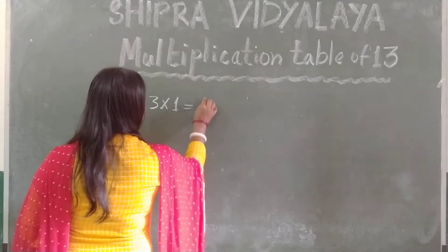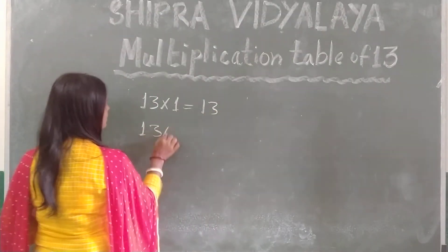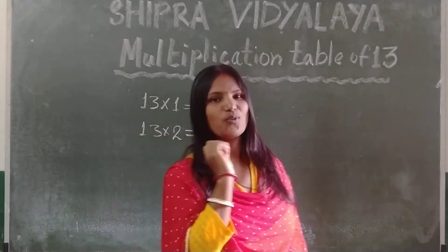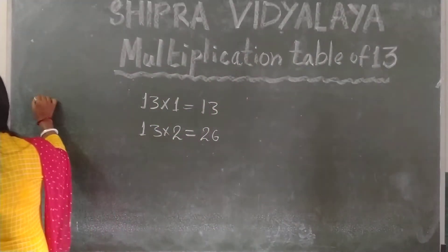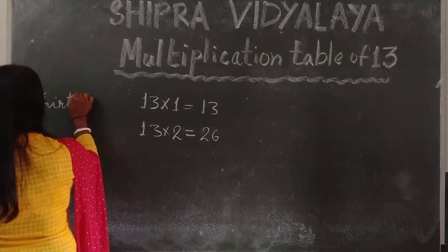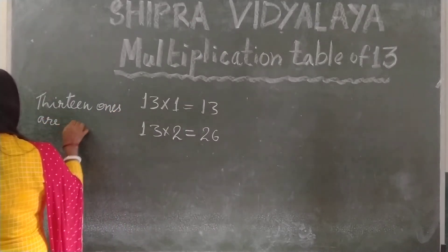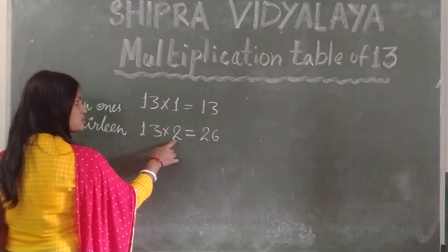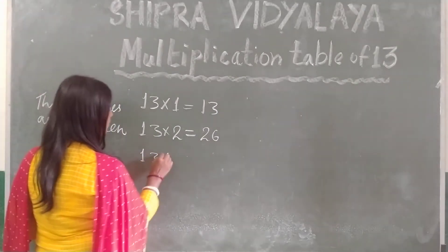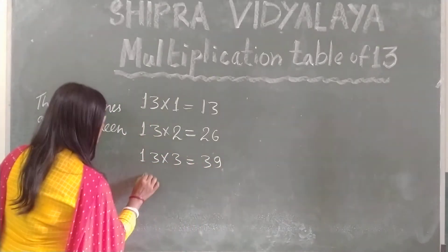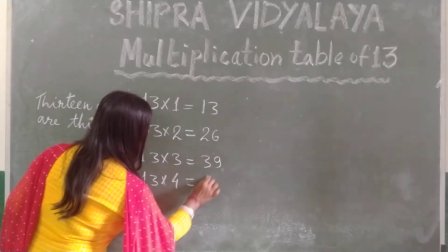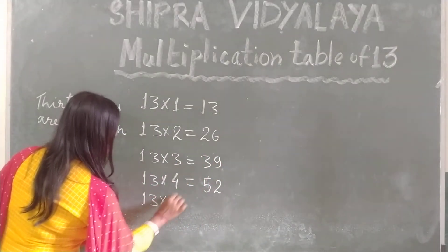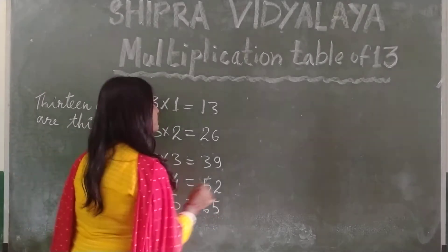13 ones are 13. 13 2's are 26. Is it right? No, it is wrong. You should say 13 ones are 13. 13 ones are 13. 13 2's are 26. 13 3's are 39. 13 4's are 52. 13 5's are 65.